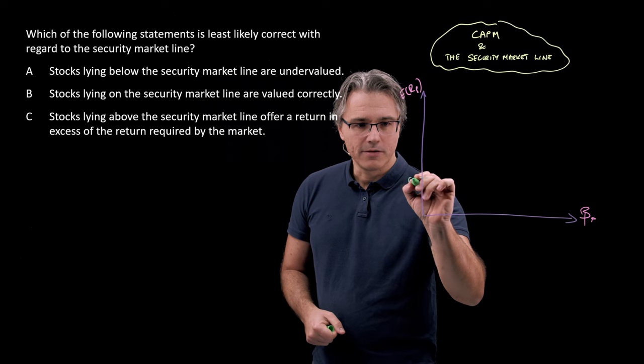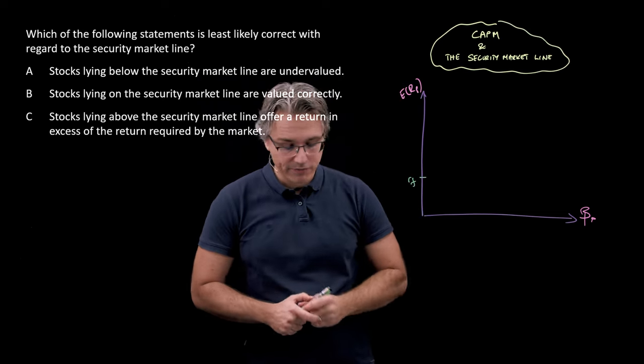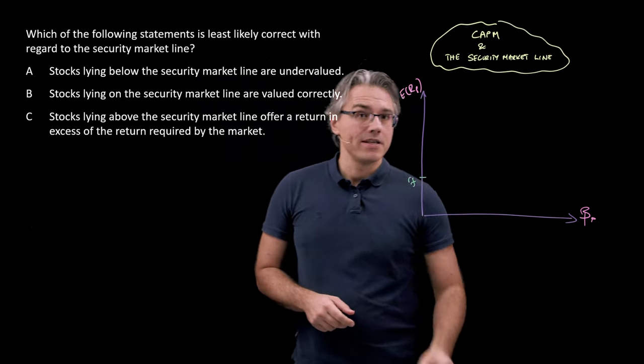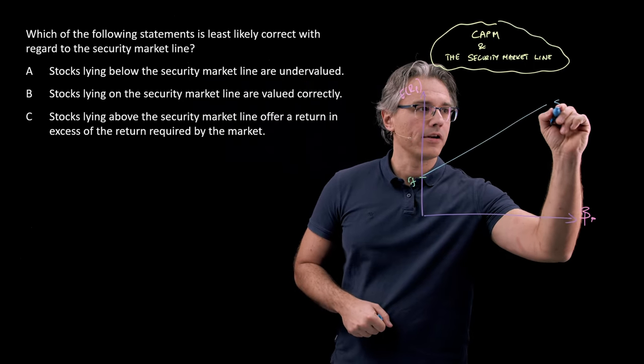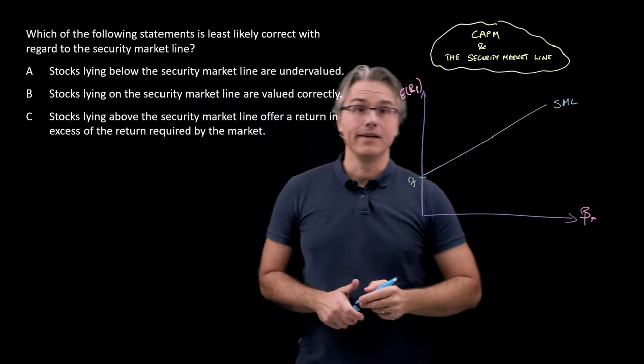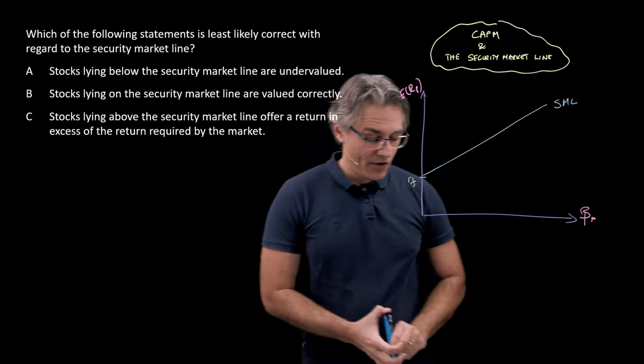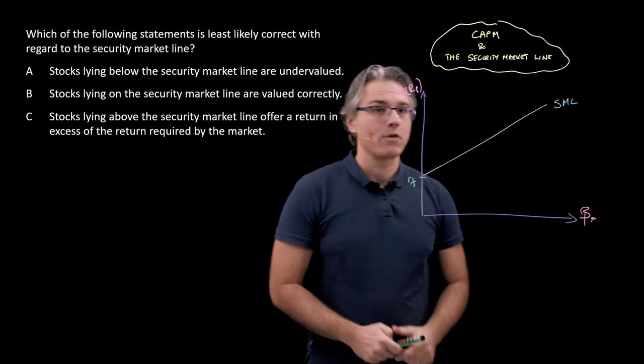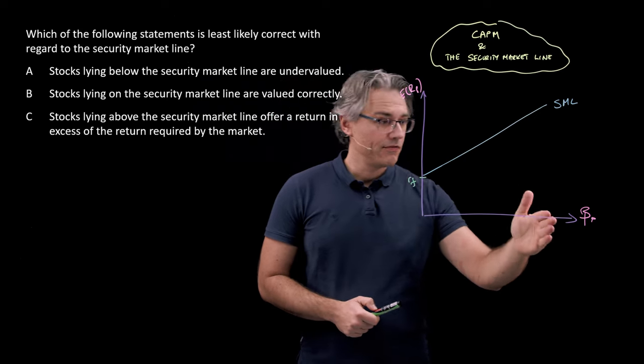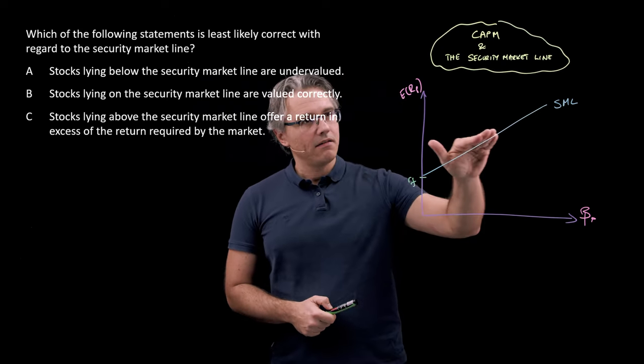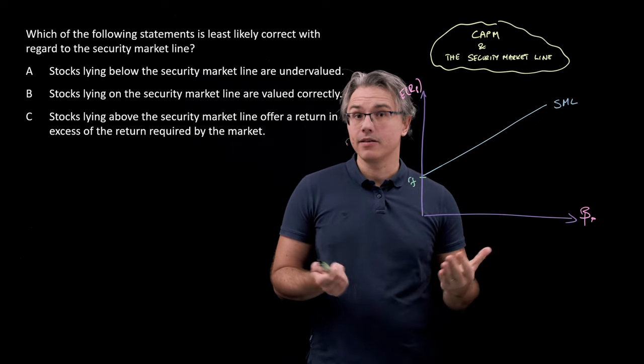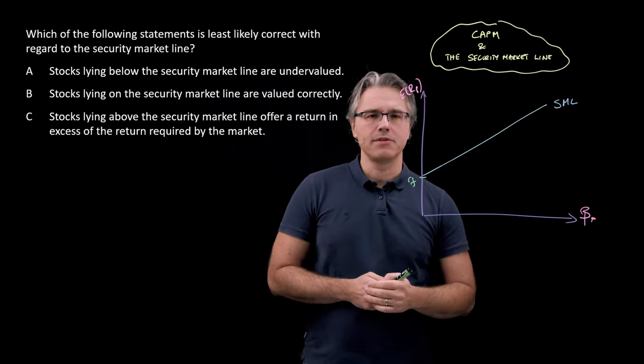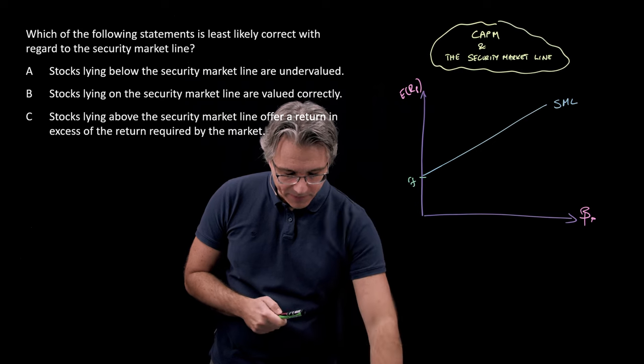And over here I'm going to label the rate of return on a risk-free asset. And the SML, the security market line, is basically this line which shows us the relationship between the level of risk as measured by beta and the rate of return required under the CAPM model from holding that specific portfolio or security.